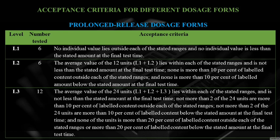If any unit is outside at L2, L3 stage applies: 12 more units taken; average of 24 units must lie within the stated range (10–30% in our example). Not more than 2 of the 24 units may be more than 10% outside or below the stated amount (i.e., outside 0–40%). None of the 24 units may go outside ±20% of the stated amount (i.e., outside 0–50%).